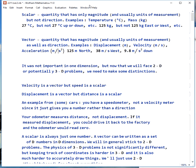For example, we could talk about temperature or mass: 27 degrees Celsius, but not 27 degrees Celsius in some direction, or 125 kilograms for mass, but not 125 kilograms east or west or down.